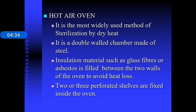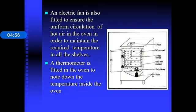The hot air oven is the most widely used method of sterilization by dry heat. It has a double-wall chamber made of steel, with insulation material like glass fibers or asbestos between the walls. It contains two or three perforated shelves, an electric fan for hot air circulation, and a thermometer to monitor the temperature inside.